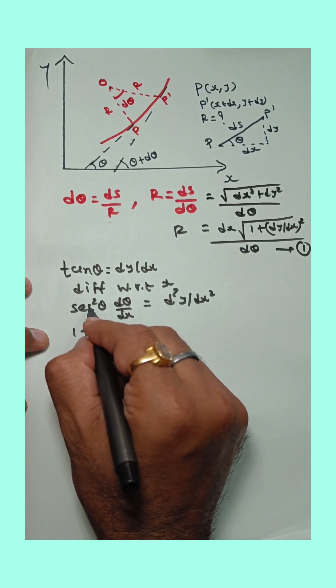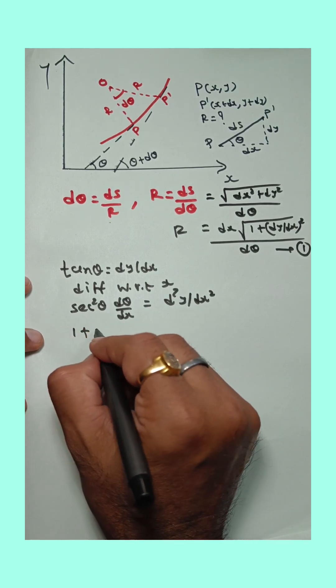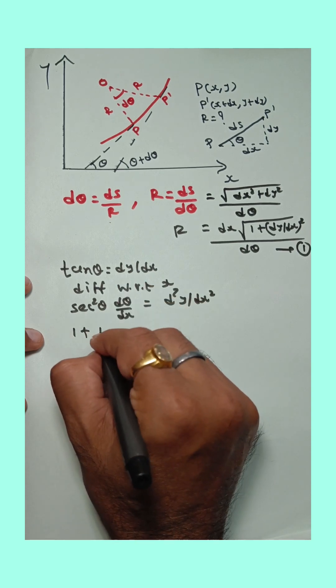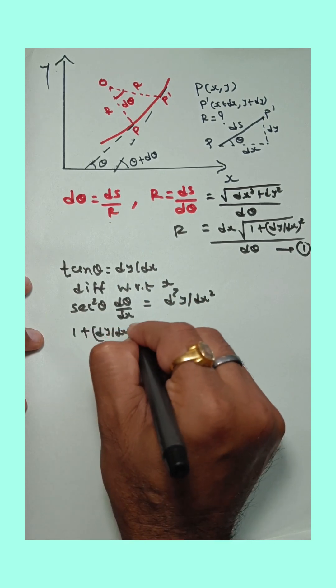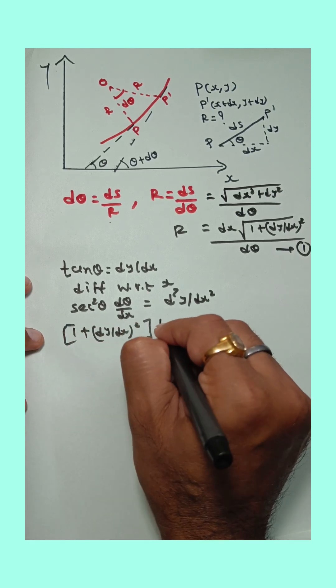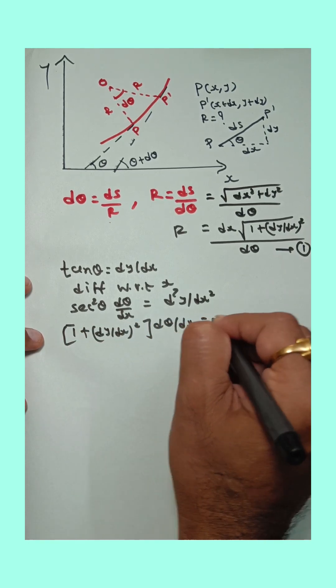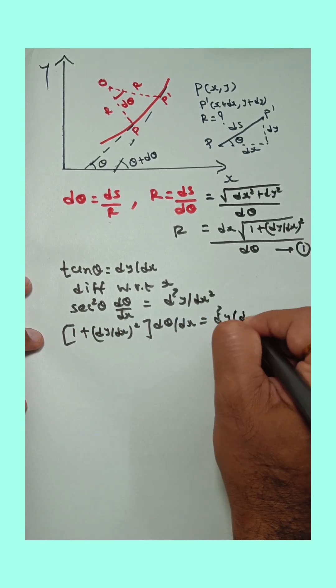So sec square θ is 1 plus tan square θ. But here tan θ is dy by dx. So tan square θ is 1 plus dy by dx whole square. dθ upon dx is equal to d square y upon dx square.